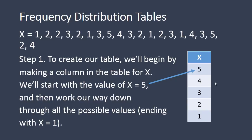So here we've listed all the possible values that occur for our variable. So we have 5, 4, 3, 2, 1 just like we saw before.